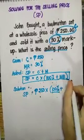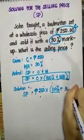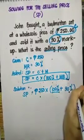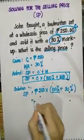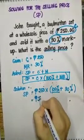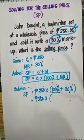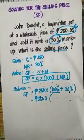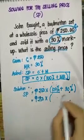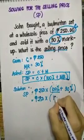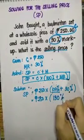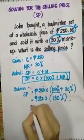Then plus the MR, our markup rate is 30%. So 250 pesos times, we'll add the numbers in the parenthesis first. 100% plus 30% is 130%.